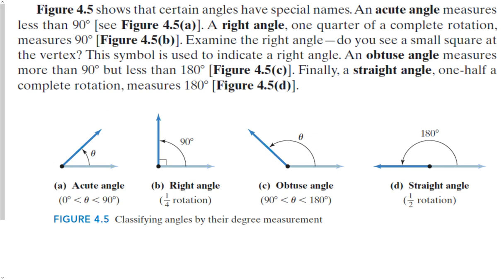Let's talk about angles that have special names — this should be fairly familiar from geometry. If an angle is between 0 and 90 degrees, it's called an acute angle. A right angle is equal to 90 degrees, which happens to be a quarter of a rotation around a complete circle. An obtuse angle is between 90 and 180 degrees. And finally, a straight angle is actually halfway around a complete circle.